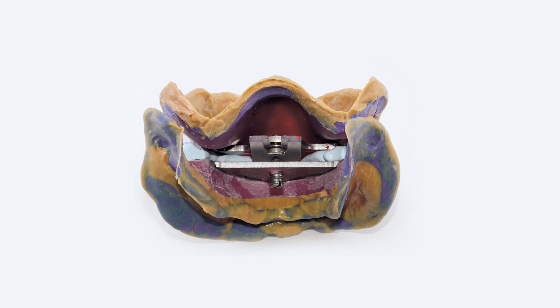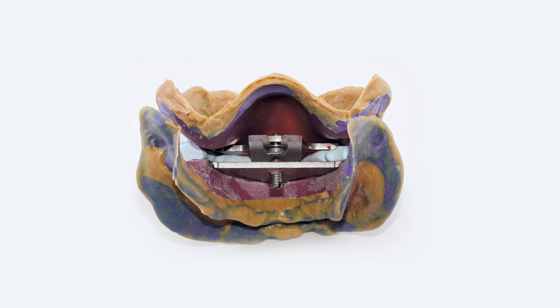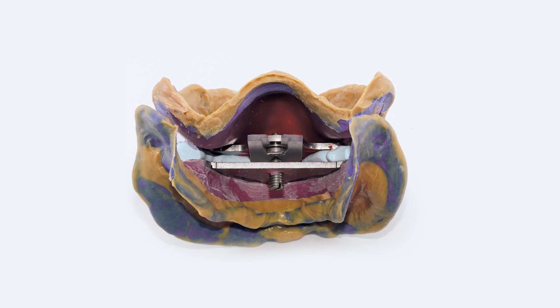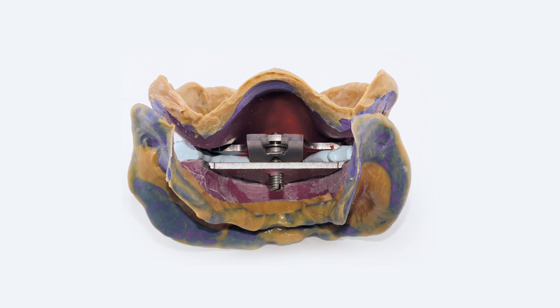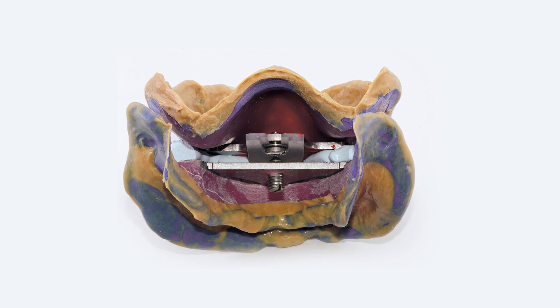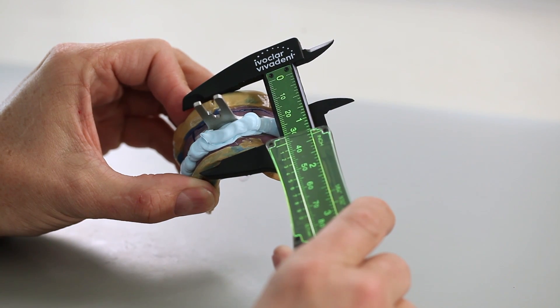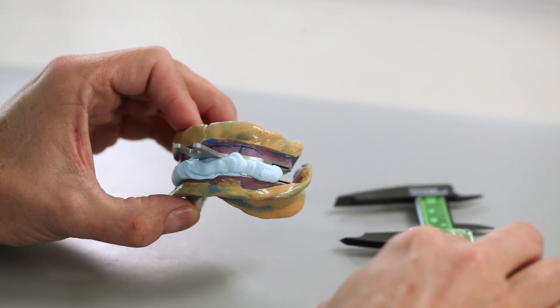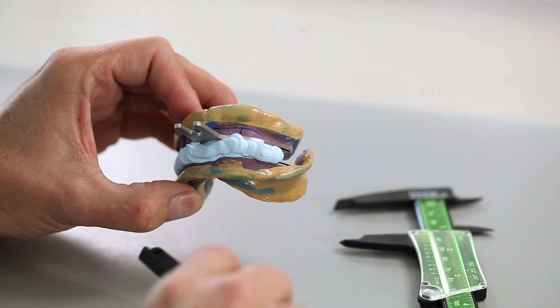The dental technician receives two functional impressions which are secured in the correct occlusal height and centric position by means of the intraoral registration of the Nathometer M. Measure the patient specific intervestibular distance in the anterior region and note it down.